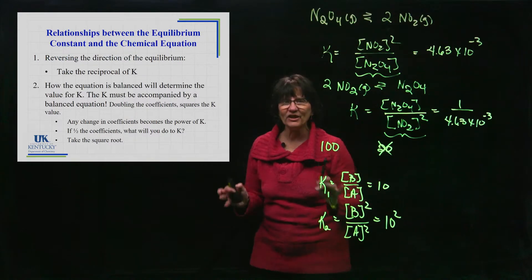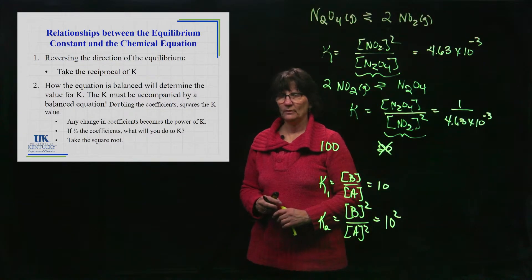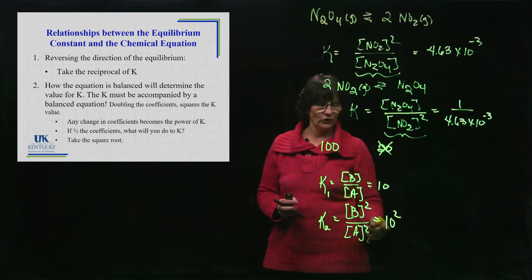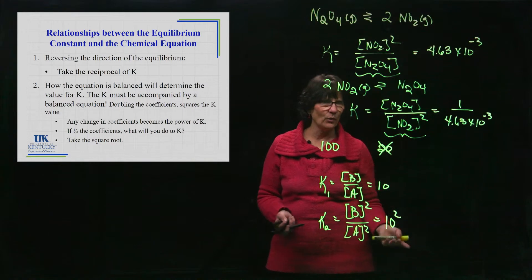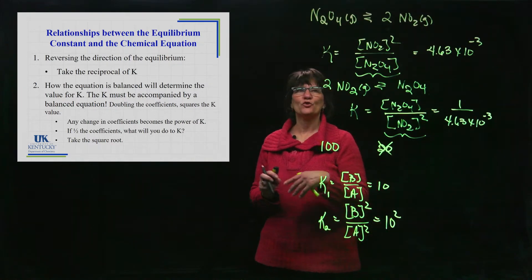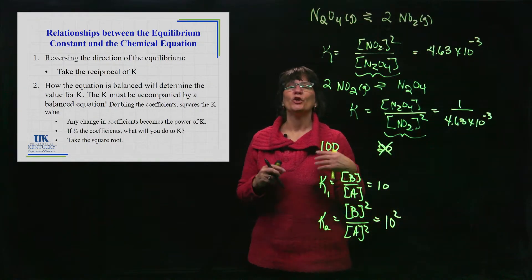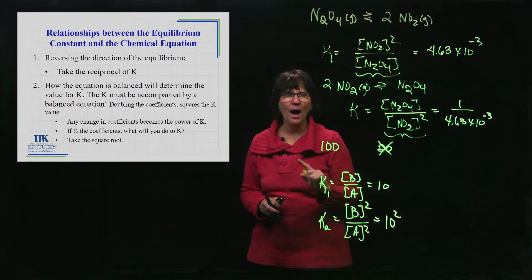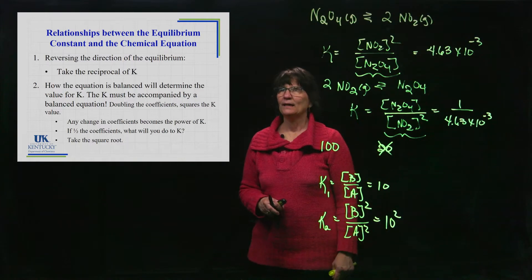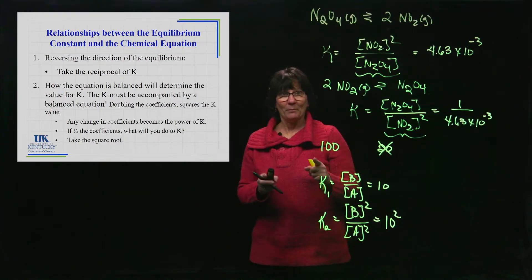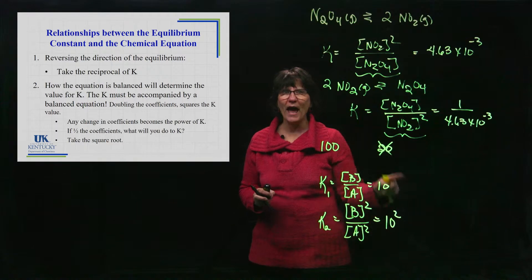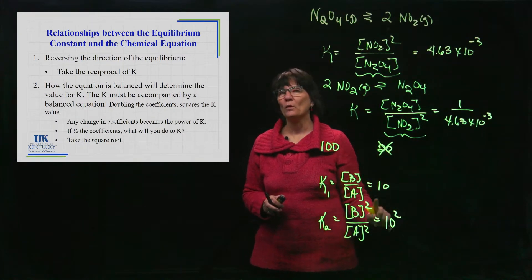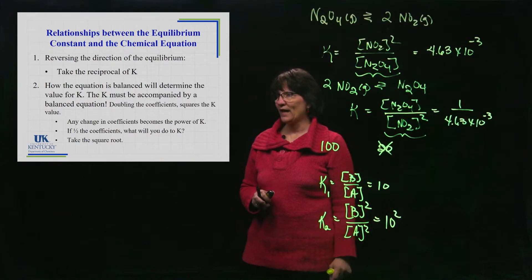So any change becomes a change in the power. Any manipulation you do. If you double it, you square it. If you half it, you take the square root. If you triple it, you cube it, you got the picture. Because the coefficients become powers. They're not multipliers to your K. I don't know what kind of tap dance I can do to make you remember that, but hopefully you wrote it out and you see why it's that way.